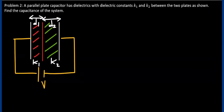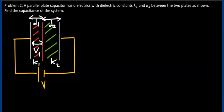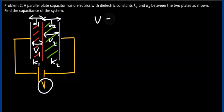Problem 2. A parallel plate capacitor has dielectrics with dielectric constants K1 and K2 between the two plates, as shown. Find the capacitance of the system. We note that these two dielectrics are placed in series, side by side. So, if you assume the potential difference between the surfaces of the first dielectric is V1 and of the second dielectric is V2, the original potential difference V must equal V1 plus V2 because these two dielectrics are in series.